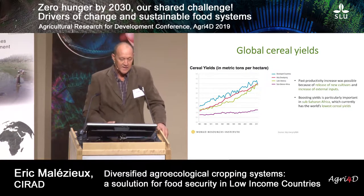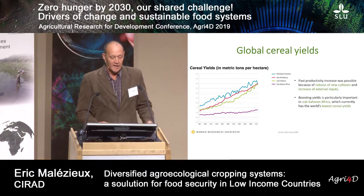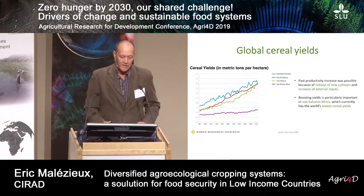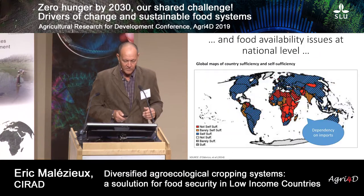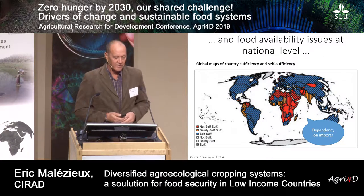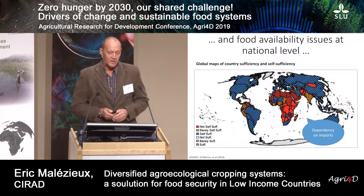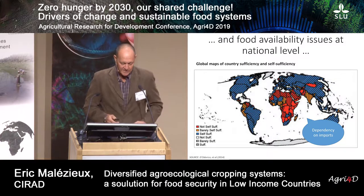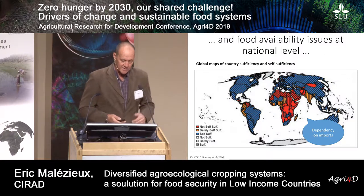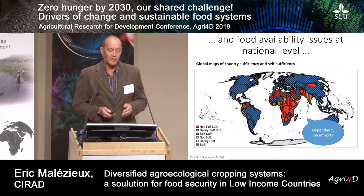This productivity increase in Europe and Asia was possible because the yields of new cultivars were increased along with external inputs, but with very high environmental costs. The situation now in Africa demands our attention. When looking at food availability at the national level, countries which are not self-sufficient are shown in red on this map — mainly countries in Africa and also parts of Asia. Some of these countries that require food importation are also not sufficient at all, shown as vertical stripes.